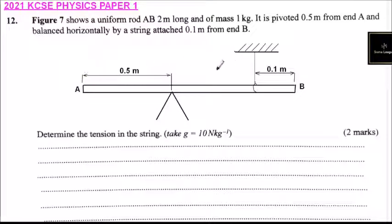We have our diagram here. This is where we have a rod of 1 kg. And the pivot is 0.5. And we have a string that balances the system which is attached at 0.1 meters from B.